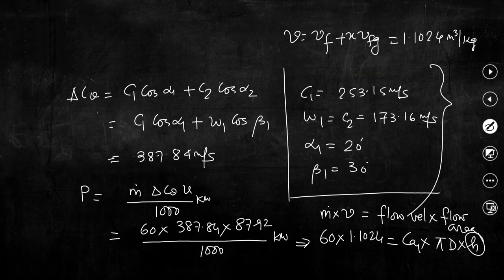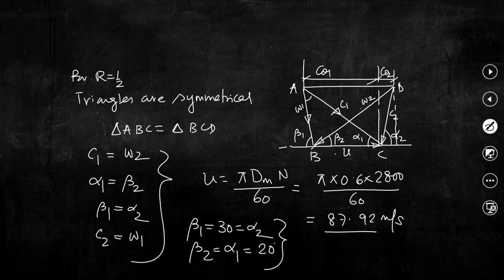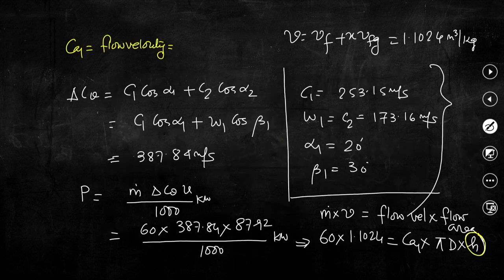In this expression, we know d_m, m_dot, and specific volume v. C_a1 equals C_1 × sin(alpha_1), which we can easily calculate since C_1 and alpha_1 are known. Plugging in the value of C_a1 and d_m, we can calculate the blade height h. The numerical value of h should be of the order of centimeters.